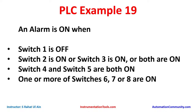We will use a normally closed contact for switch one, since switch one should be off to turn on the alarm. For all other switches — switch two to switch eight — we will use normally open contacts. Switch two and switch three will be connected in parallel with each other to implement the OR logic gate.